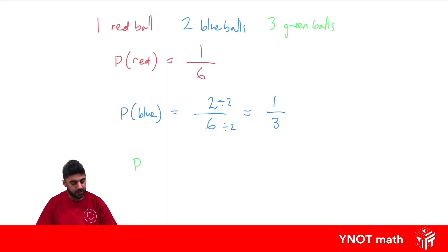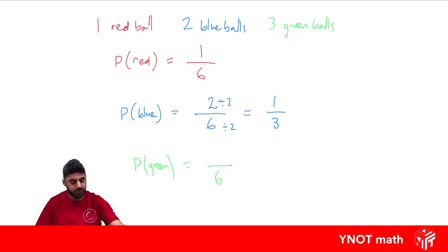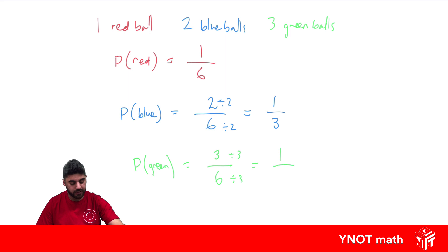Finally, what's the probability of picking a green ball? There are still six balls to pick from, and the number of ways we're interested in — well, there are three green balls. So our probability is three out of six, but we can simplify by dividing both by three: three divided by three is one, and six divided by three is two. So the probability of getting a green ball is one half.